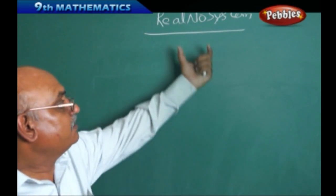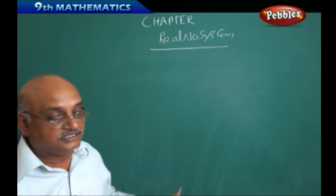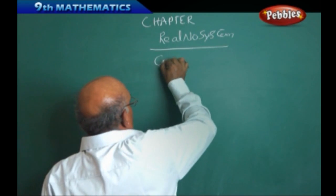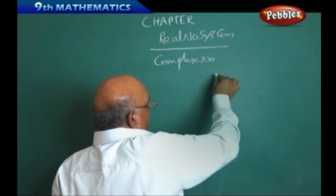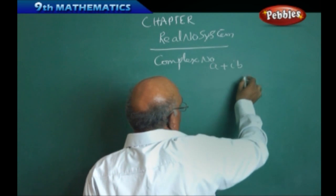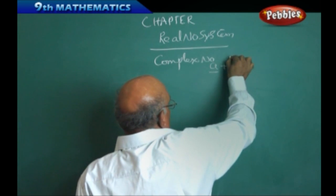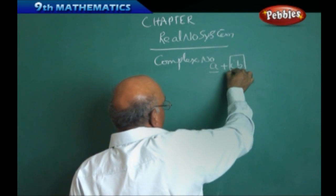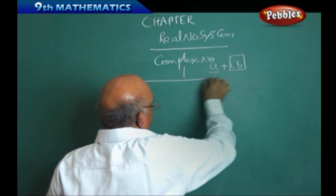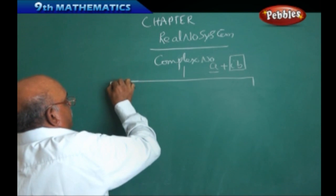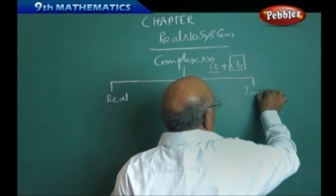The real number system has started with a sort of number system called the complex number system. In a complex number system, there are two parts. Complex numbers can be written as a plus ib, where a is called the real part, and b is also a real number, but since it is involved with ib, we call it the imaginary part.